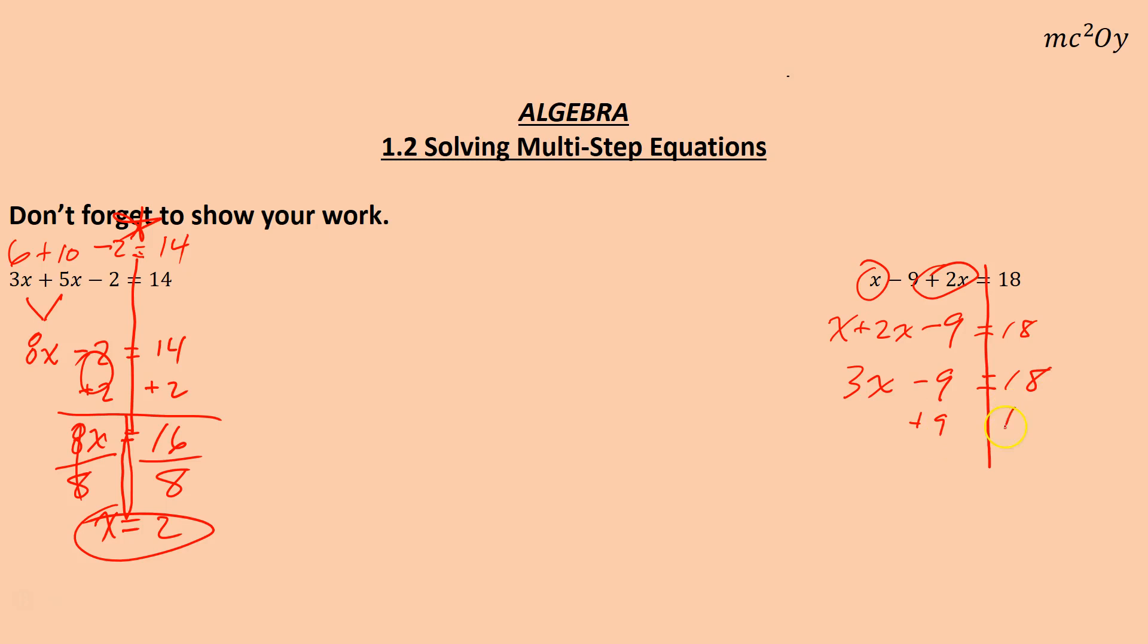We'll go ahead and add 9 to both sides. Just doing inverse operations. Since they subtracted 9, we added 9. We get 3x equals 27. And they're multiplying by 3, so we divide by 3. So 1x equals 9.